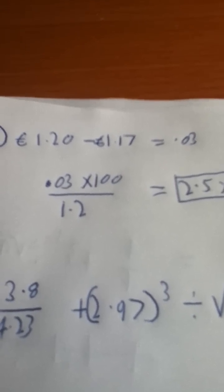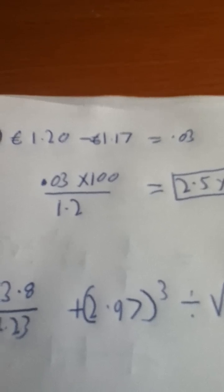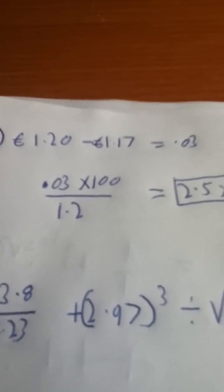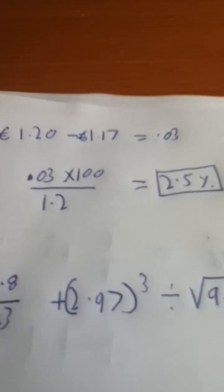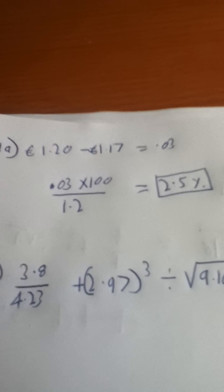In this question you take 1 euro 17 from 1 euro 20 and get 0.03. 0.03 is multiplied by 100 and then divided by 1.2 and you get the answer of 2.5%.